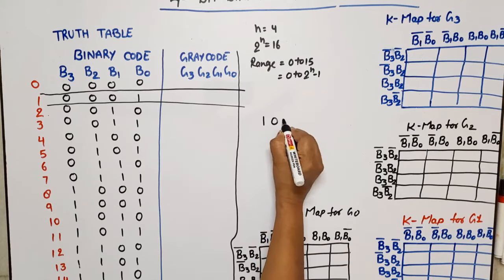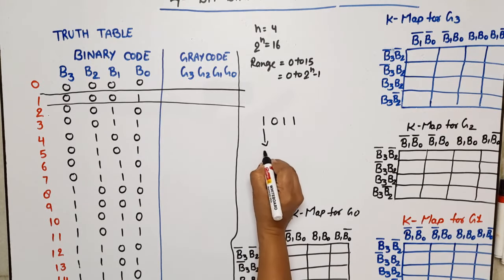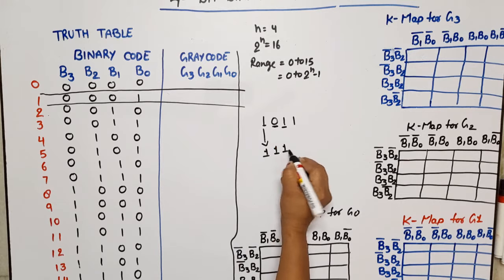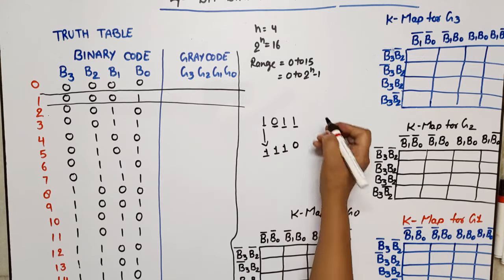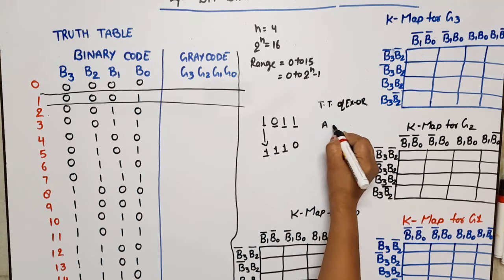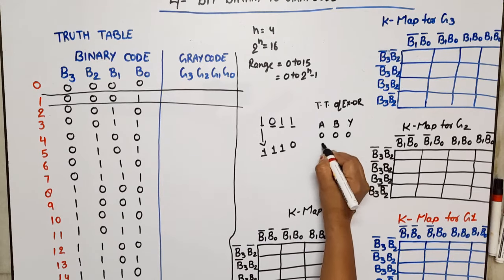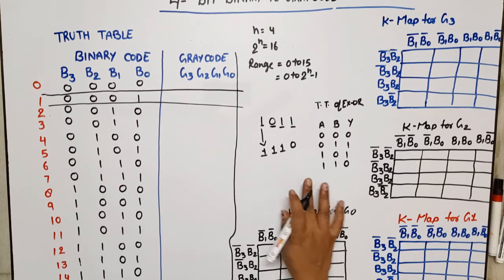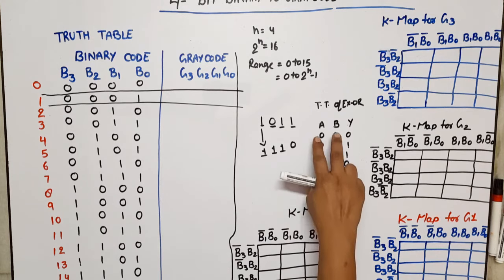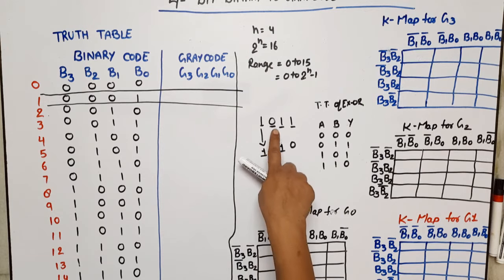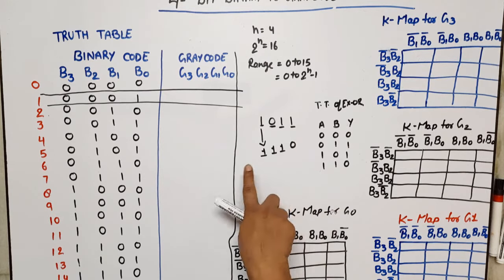Let me explain the conversion method with an example. Suppose my number is 1011. To convert to gray code: the first bit remains the same. Then we XOR adjacent bits — first and second, second and third, third and fourth. Recalling the XOR truth table: if both inputs are the same (both 0 or both 1), output is 0; if inputs are different, output is 1.